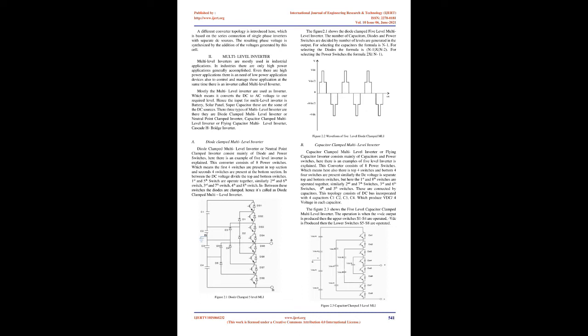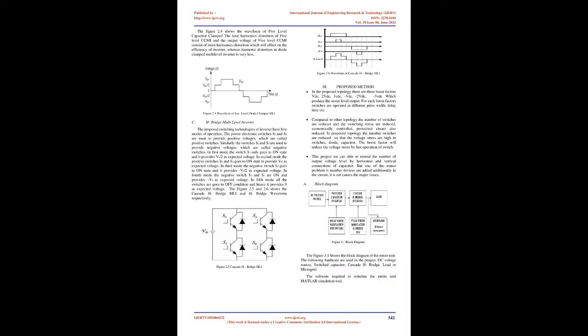Figure 2.1 shows the diode clamped 5-level multi-level inverter. The number of capacitors, diodes, and power switches are decided by the number of levels generated in the output. For selecting capacitors the formula is N-1; for selecting diodes the formula is (N-1) × 2; for selecting power switches the formula is 2 × (N-1). A diode clamped multi-level inverter consists mainly of diodes and power switches. For a 5-level example, this converter consists of 8 power switches — the first 4 in the top section and the second 4 in the bottom. The switches are paired: first and fifth, second and sixth, third and seventh, fourth and eighth, with diodes clamped between them, hence the name diode clamped multi-level inverter.